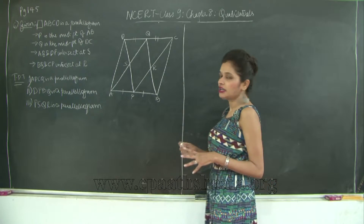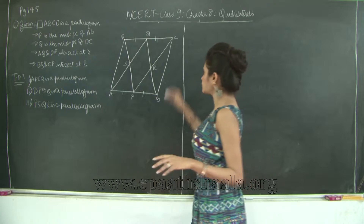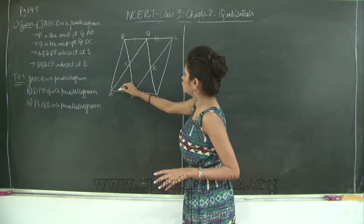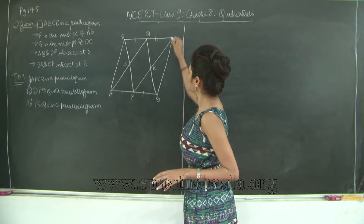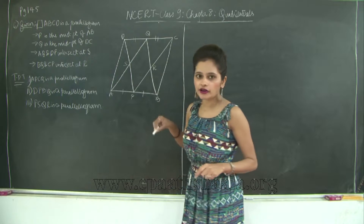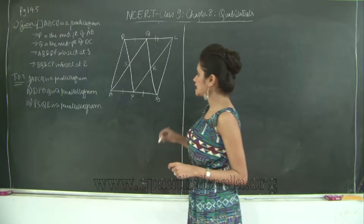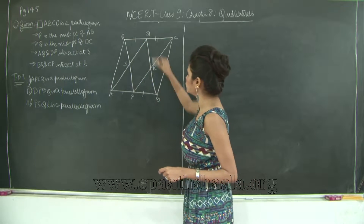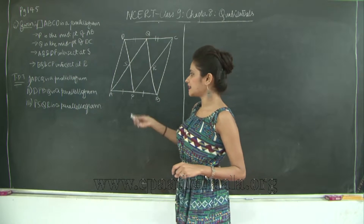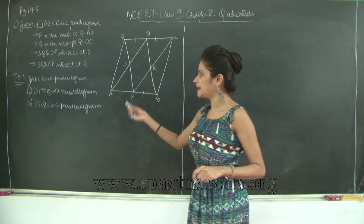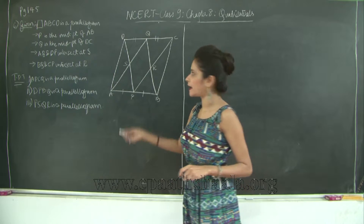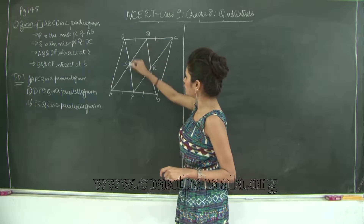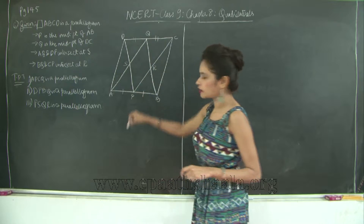Let us see which are the three quadrilaterals. First, I need to prove that APCQ is a parallelogram. Then I need to prove that DPBQ is a parallelogram. And also I need to prove that PSQR is a parallelogram.